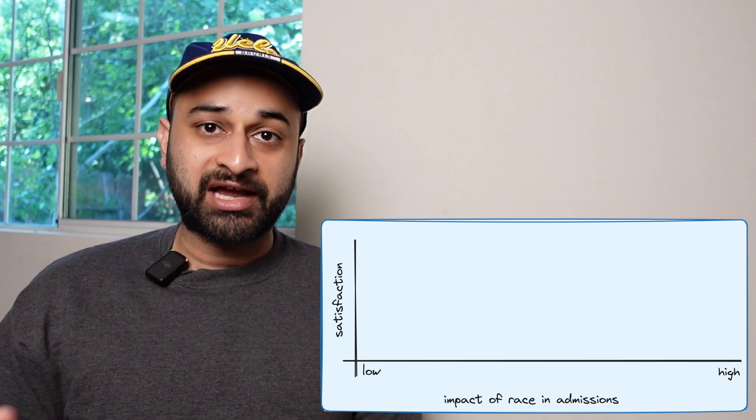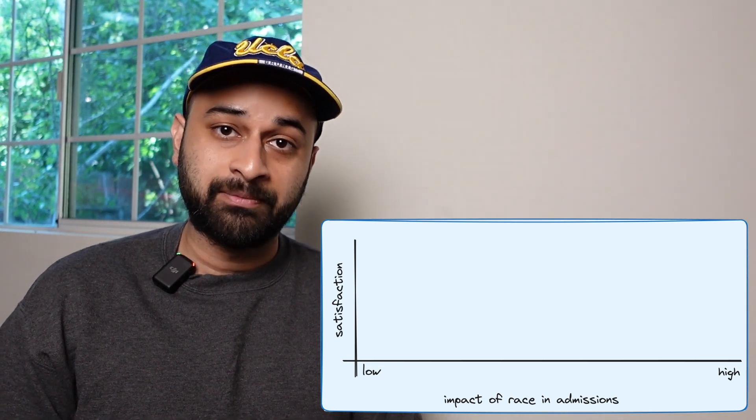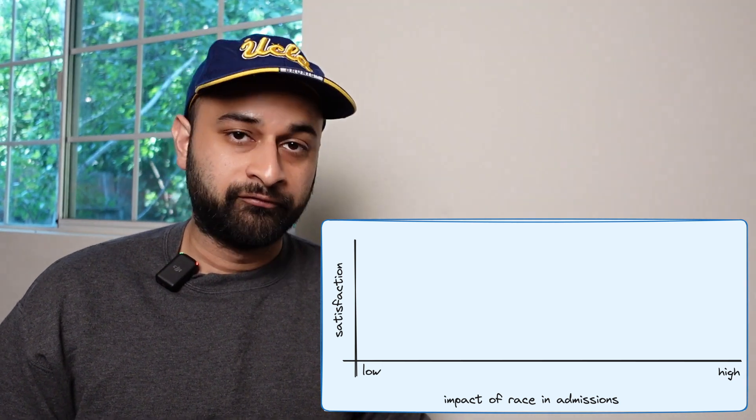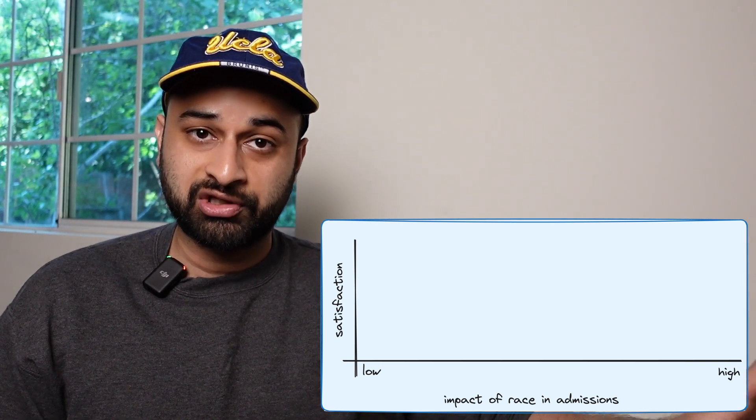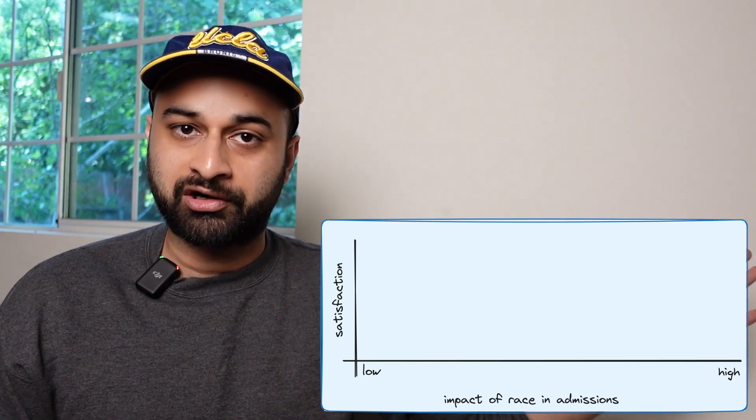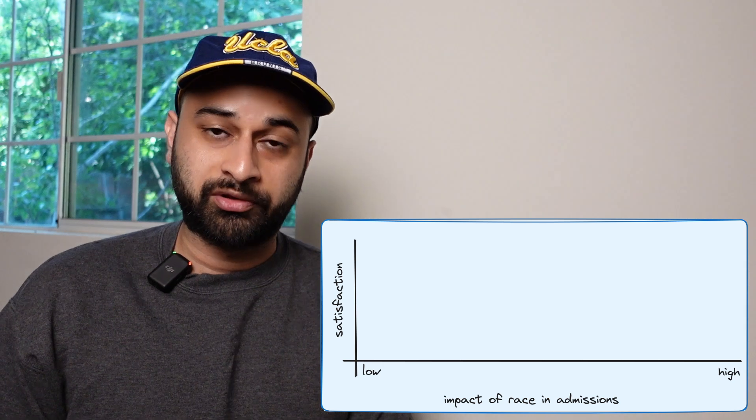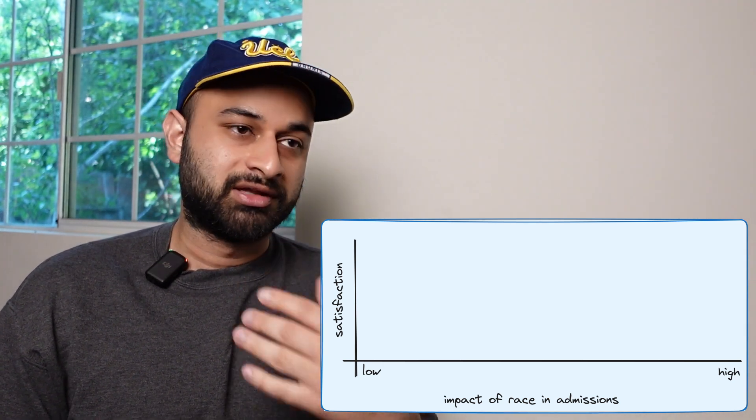Let's follow this train of thought. Admissions decisions are clouded in mystery, and specifically the extent to which race is used is also a mystery. I don't think anyone can say race accounts for 15% or 85% of the decision — we just don't know. So, as we do in statistics when we don't know something, we can turn to Bayesian statistics and create a visualization. On the x-axis, we have the amount to which race plays an impact in college admissions. On the far left, race has very low impact; on the far right, admissions are purely race-based.